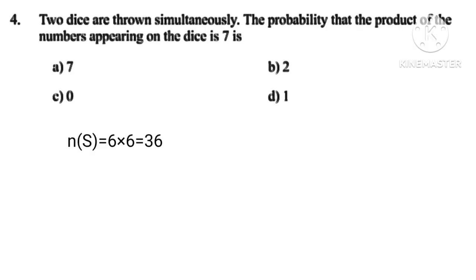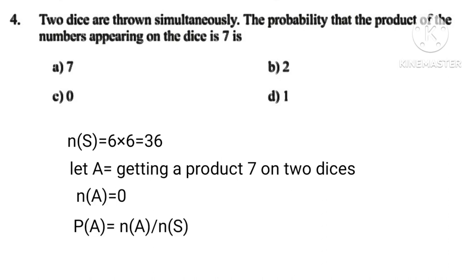N S equals 6 times 6 equals 36. Let A equals getting a product 7 on 2 dice. Hence N A equals 0. Therefore, P A equals N A upon N S equals 0 upon 7 equals 0.